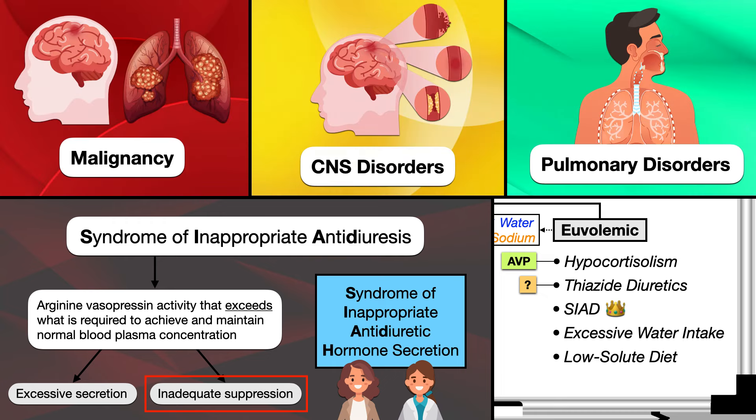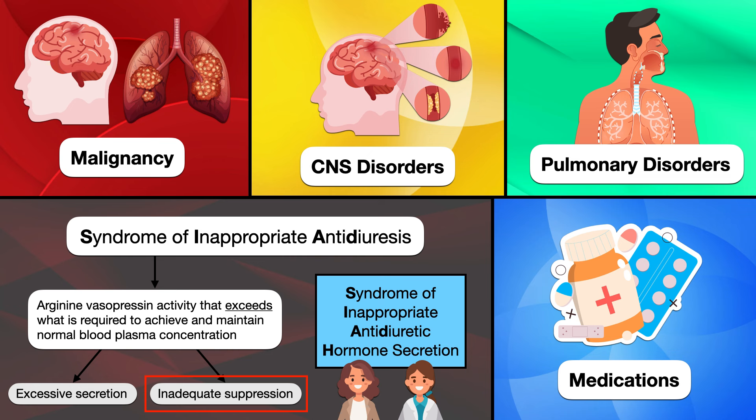Common causes of SIAD include malignancy of the brain or lungs, central nervous system disorders from stroke or trauma, and pulmonary conditions like pneumonia and respiratory failure. Medications can also increase arginine vasopressin release or potentiate its effects — examples include narcotics, opioids, antidepressants, and antipsychotic medications.